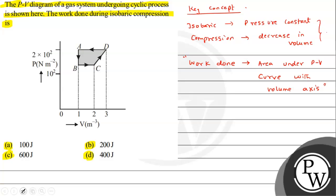And here we can solve it. Now we are asking work done during an isobaric compression process. Isobaric means pressure is constant and compression means volume is decreasing. So from the figure, this process will correspond to DA. Okay, pressure is constant, that is 2 into 10 raised to 2.